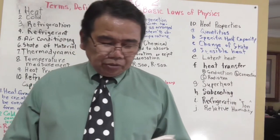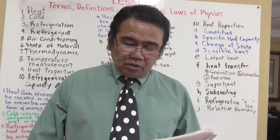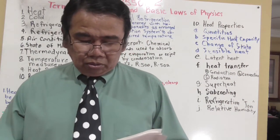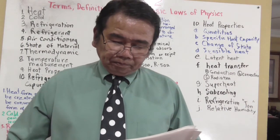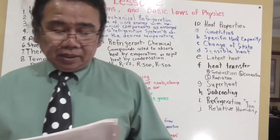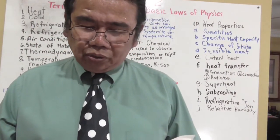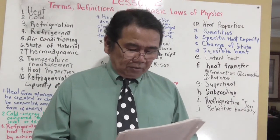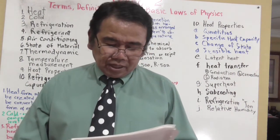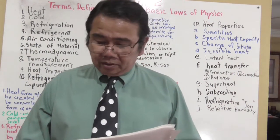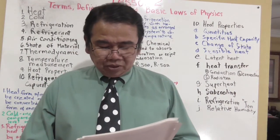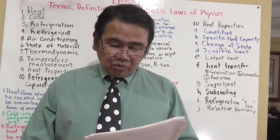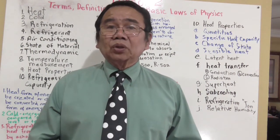Humidity describes the presence of moisture or water vapor in the air. Relative humidity is a ratio — expressed as a percent — of the amount of water vapor present in the air to the greatest amount possible at the same temperature. Warm air will hold more moisture than cold air.